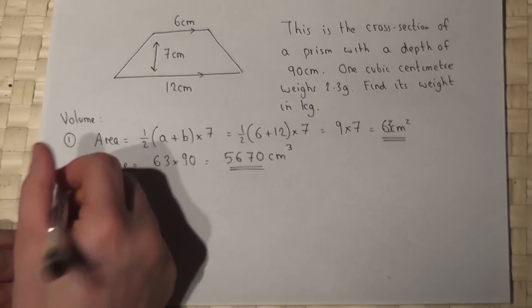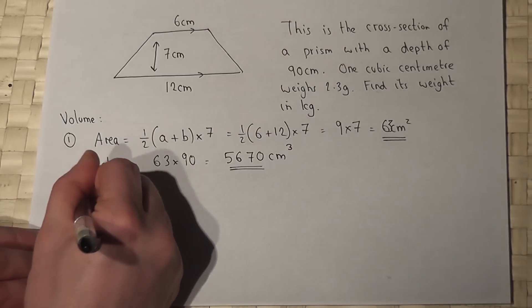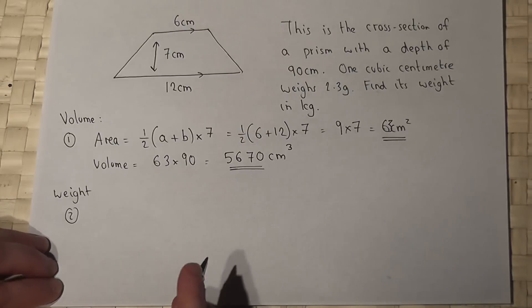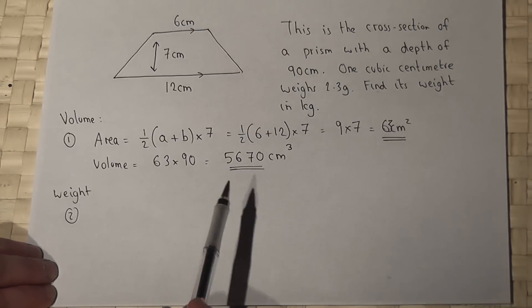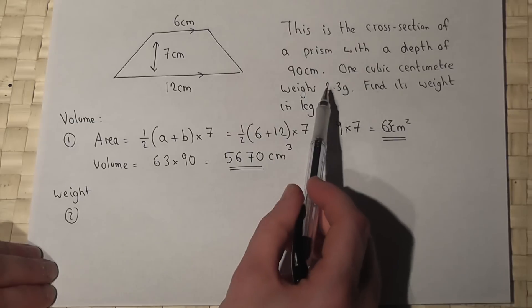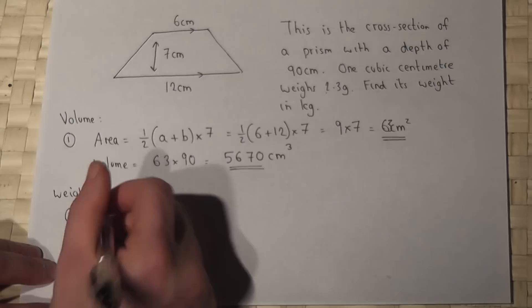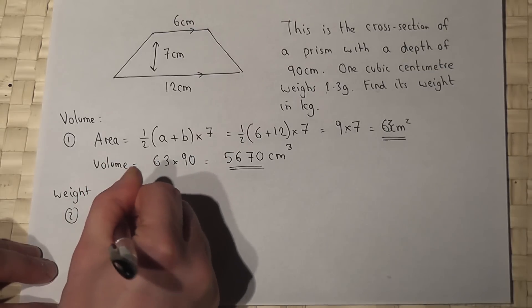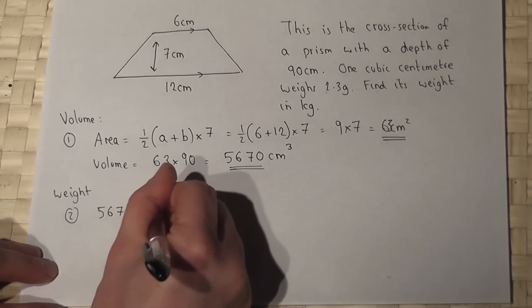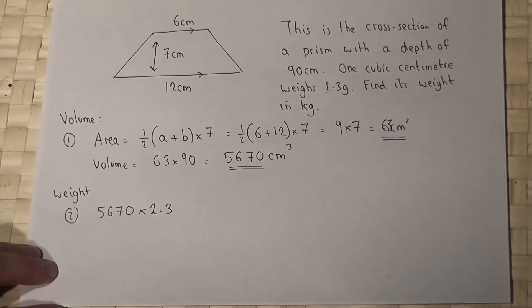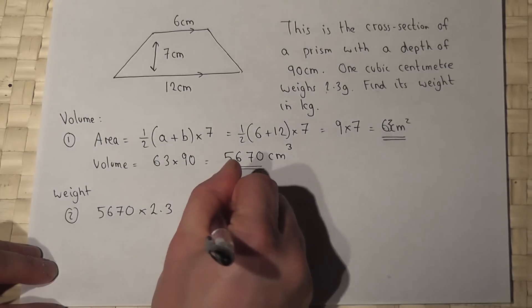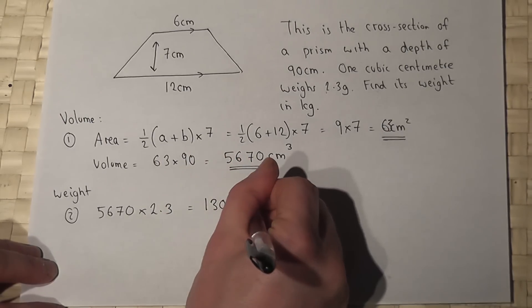For the weight, every single cubic centimeter weighs 2.3 grams, so its total weight must be 5670 times by 2.3 which works out at 13041 grams.